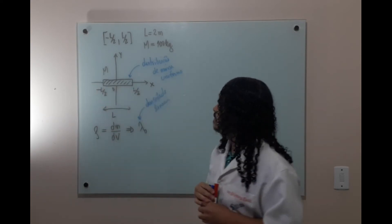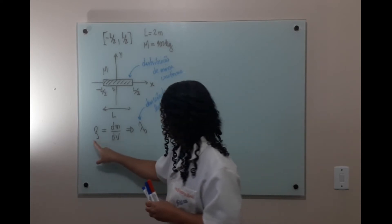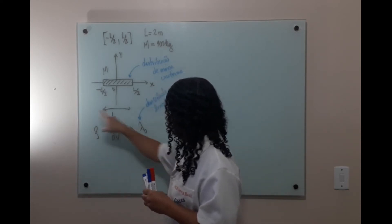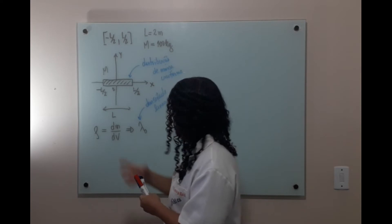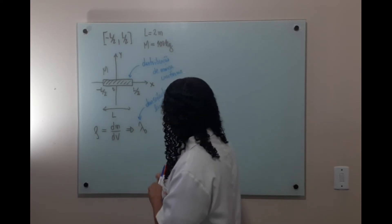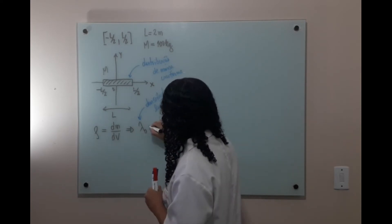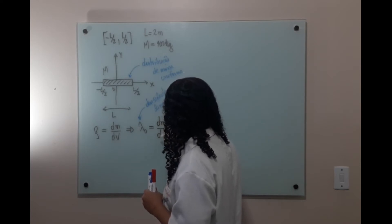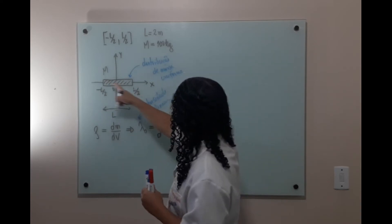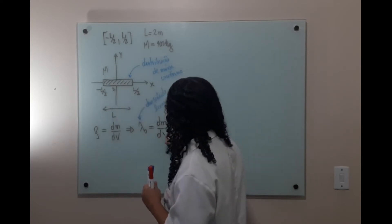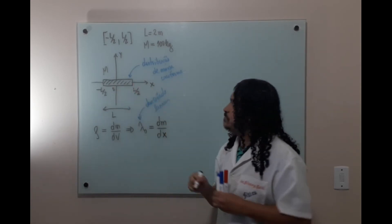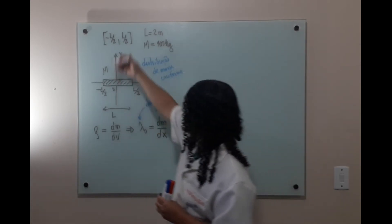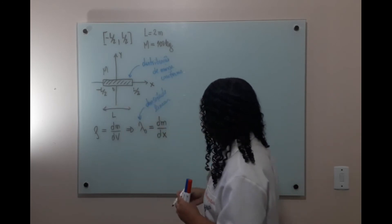Esse corpo se torna um corpo de uma única dimensão. Então, nesse caso, a densidade volumétrica se transforma: no caso da densidade linear, a relação é entre a massa e o elemento de comprimento, que nesse caso está na direção do eixo X. Se estivesse no Y, seria Y. Se estivesse em Z, seria Z. Então, nós temos só uma dimensão.